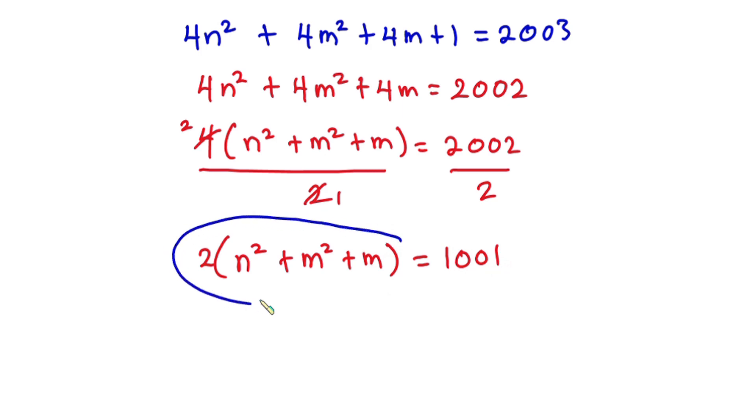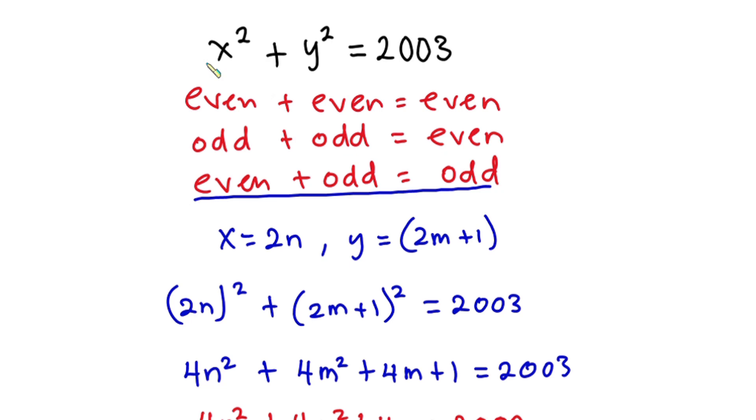Now this whole thing you're seeing here is an even number and then the right hand side is an odd number. And there's no way even number will be equal to odd. So we conclude that this problem has no integer solution.